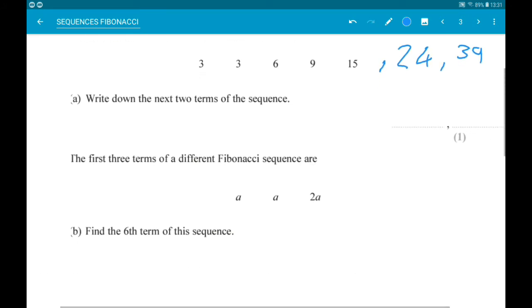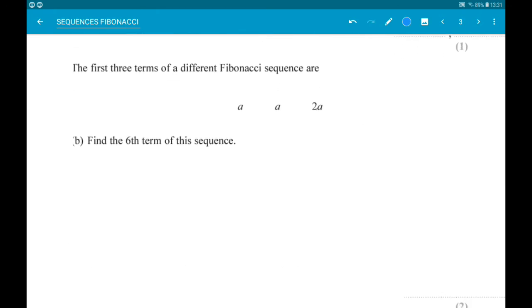Then we have the first three terms of a different Fibonacci sequence: A, A, 2A, and we want to find the sixth term. So the fourth is A add 2A, so that's 3A. The fifth is 2A add 3A, so that's 5A. So then the sixth is 3A add 5A, which is 8A.